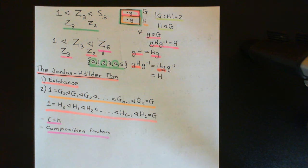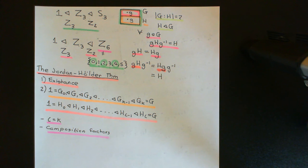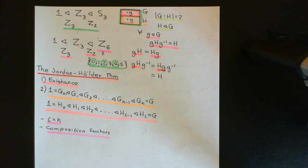So having a list of composition factors does not allow you to instantly conclude which group you are dealing with. Although every single finite group does have one well-defined list of composition factors from which you can, in a sense, think of it as being built out of. So here is the Jordan-Hölder theorem, part one and part two. We've already discussed and proved part one, so we're now going to dedicate ourselves to proving part two.